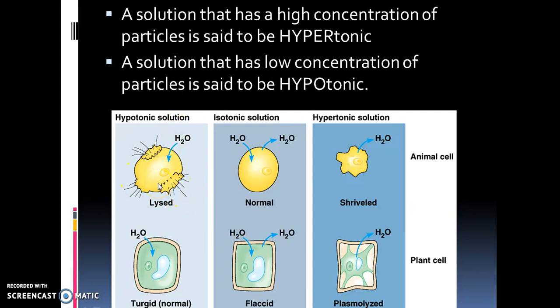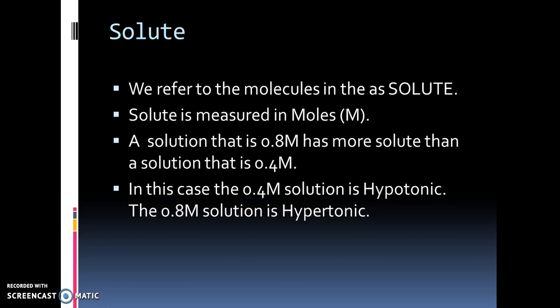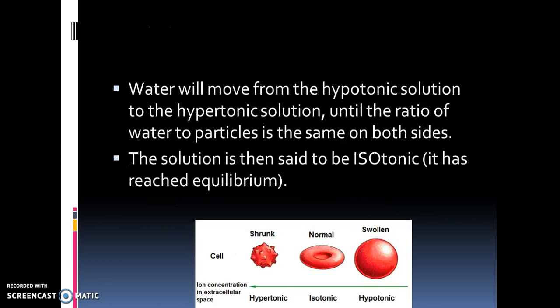When we refer to the concentration of molecules in a solution: a solution that has 0.8 molar of a solute has more solute than a solution that has 0.4 molar. Comparing these two, the 0.4 molar solution is hypotonic because it has less solute, and the 0.8 molar solution is hypertonic because it has more solute. Water will move from a hypotonic solution to a hypertonic solution until the ratio of water to particles is the same on both sides — at that point the solution is said to be isotonic, meaning it has reached equilibrium.